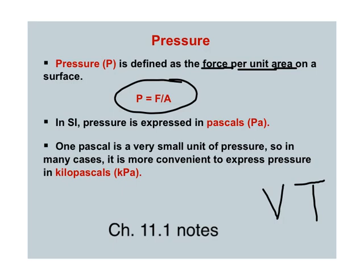You take your force, which is generally in newtons, divided by whatever area you're using — meter squared, centimeter squared, yard squared — and you just divide those two. In the International System (SI), pressure is expressed in pascals, or Pa. This is one of four pressure units that we use pretty commonly in chemistry.